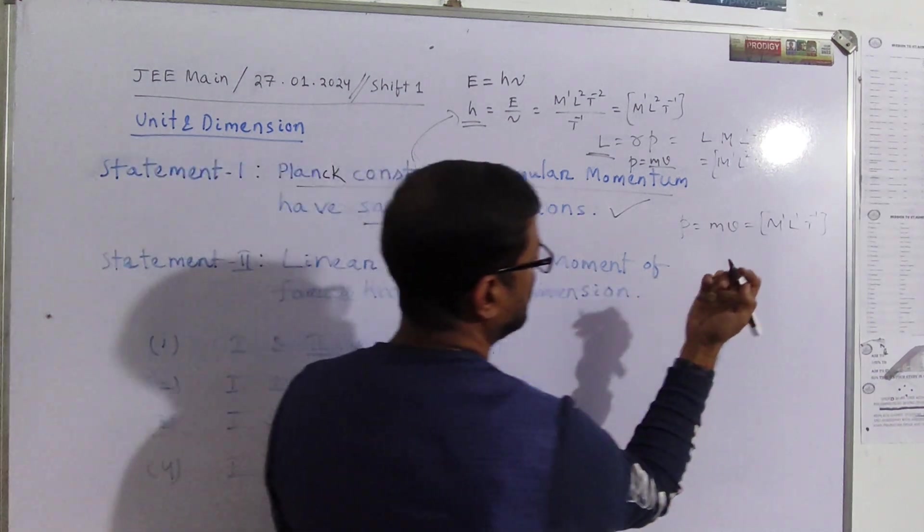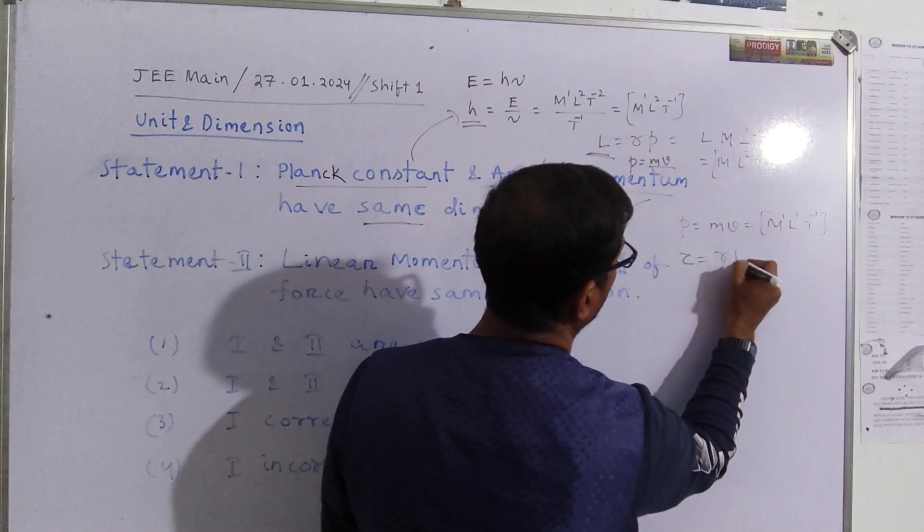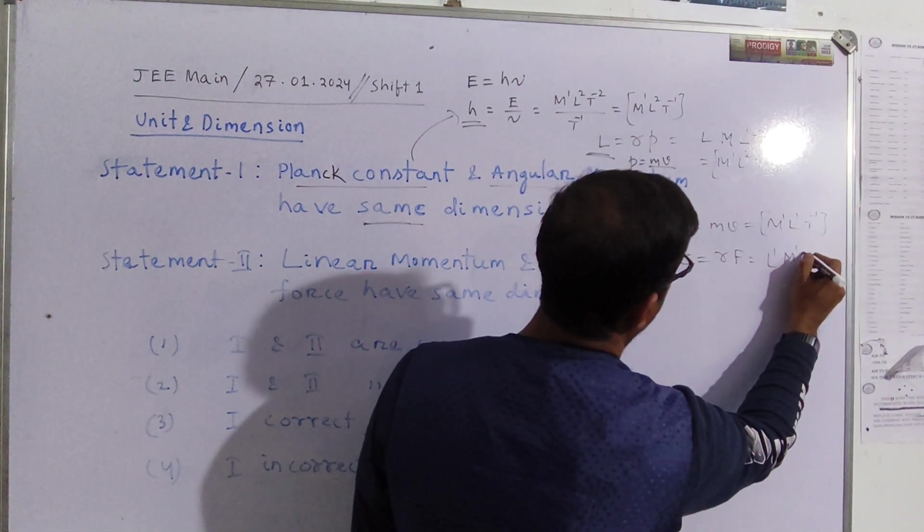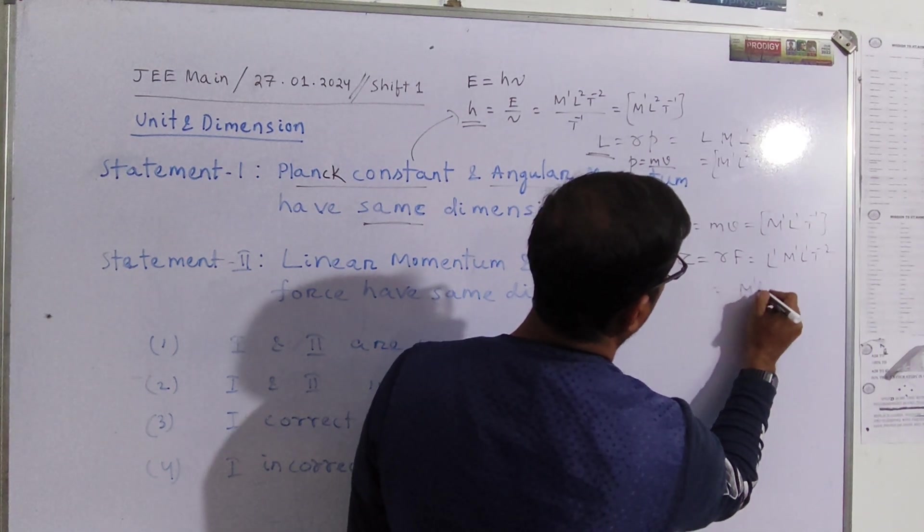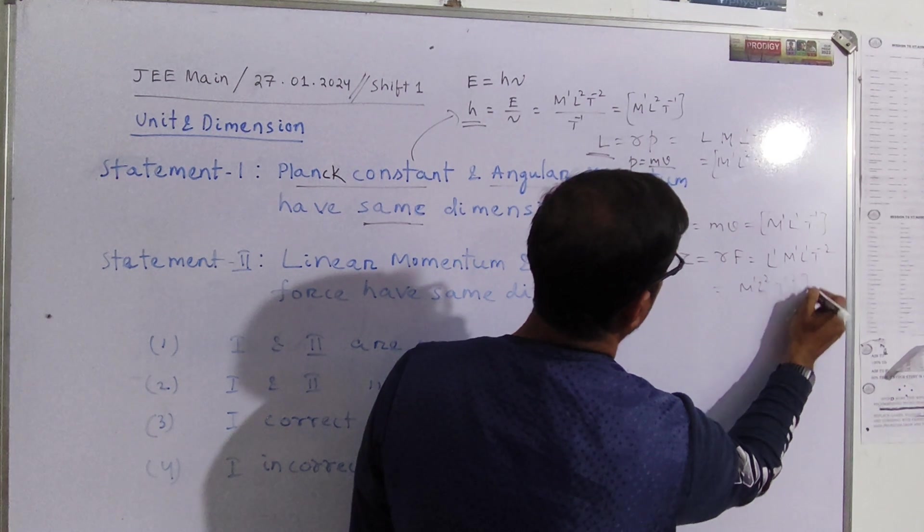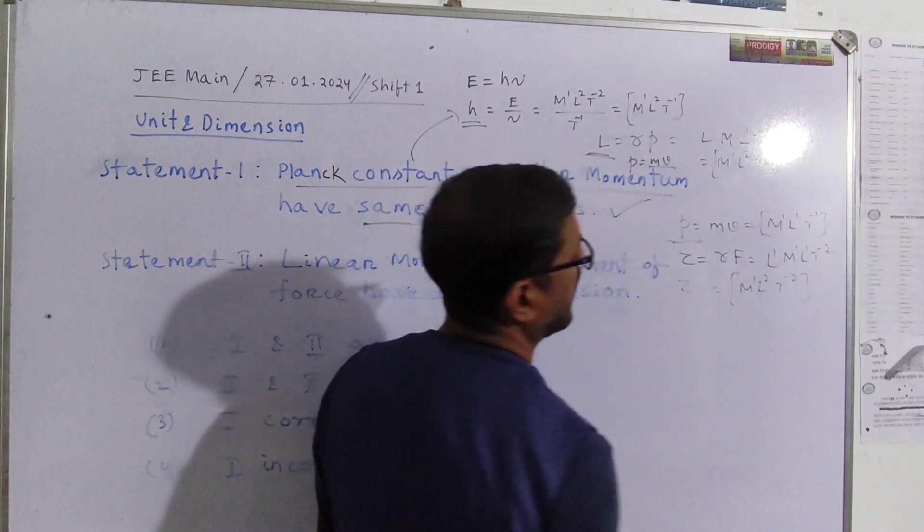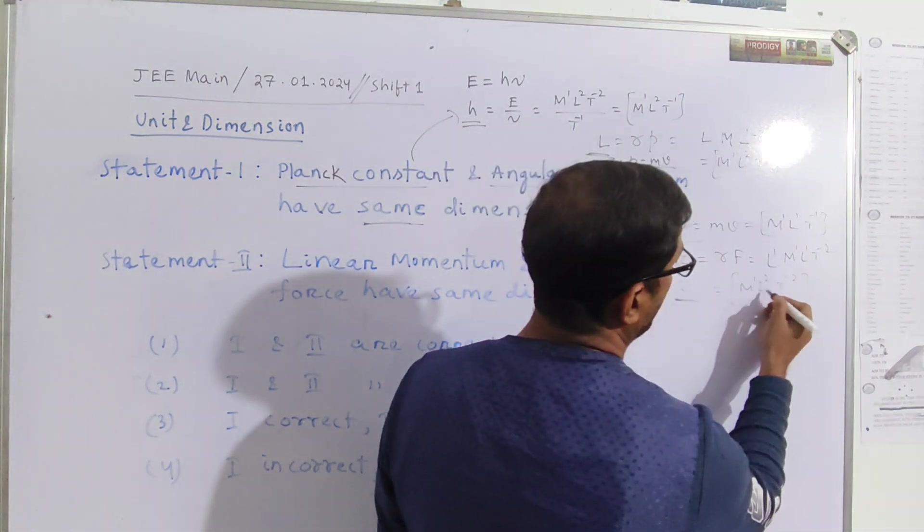Now what is the dimensional formula of moment of force? Moment of force is nothing but torque. Torque is equal to radius into force. So radius is L1, force is M1 L1 T minus 2. So it will be M1 L2 T minus 2.